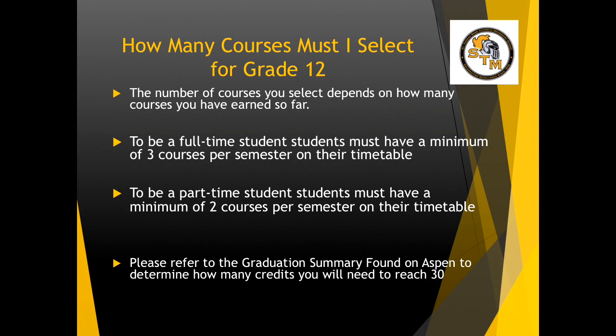Looking at specific information which can also be found in your package. For Grade 12, you might be deciding how many courses you need to select. The number of courses you select depends on how many courses you have earned so far. To be a full-time student, students must have a minimum of 3 courses per semester on their timetable. To be a part-time student, students must have a minimum of 2 courses per semester. Please refer to the graduation summary found on Aspen to determine how many credits you will need to reach. You are able to take spares if you are on track for graduation.